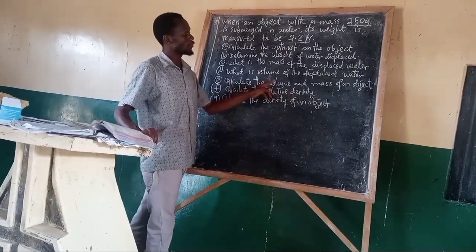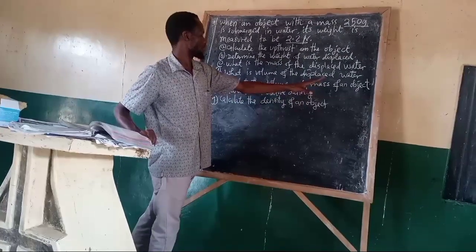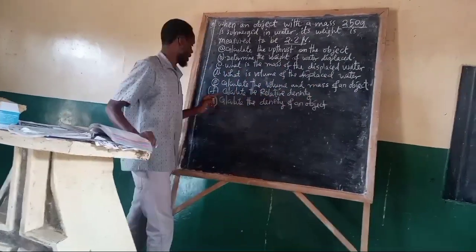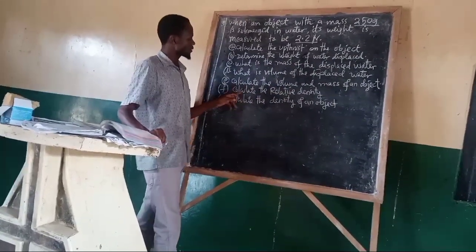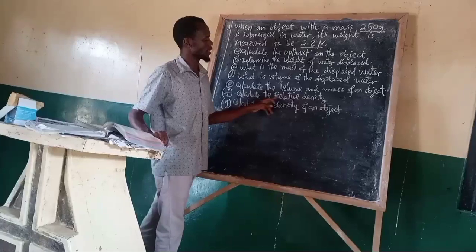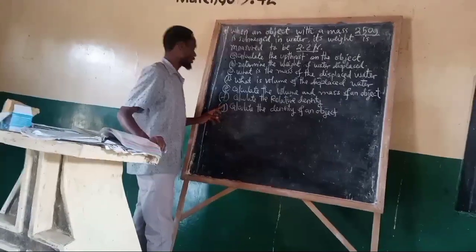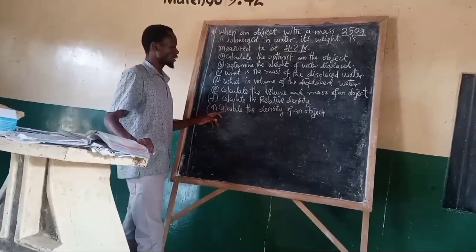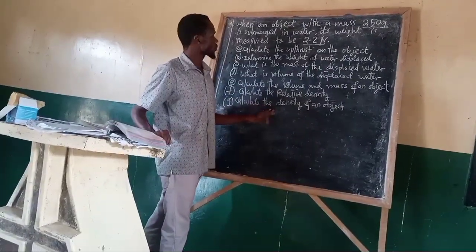5E: Calculate the volume and the mass of an object. 5F: Calculate the relative density of an object. 6G: Calculate its density. So, we are having 6 questions on how we can determine answers from only these 2 data that we've been given from the question.